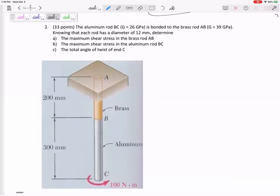Let's answer these questions. The aluminum rod BC has that shear modulus, it's bonded to brass with that shear modulus. Knowing each rod has a diameter of 12 millimeters, determine the maximum stress in the brass rod, the maximum stress in the aluminum rod, and the total angle of twist of end C. I might start with part B.